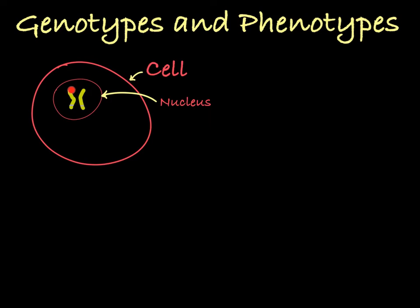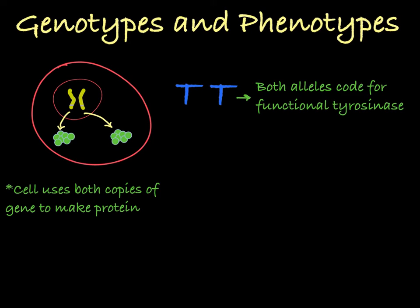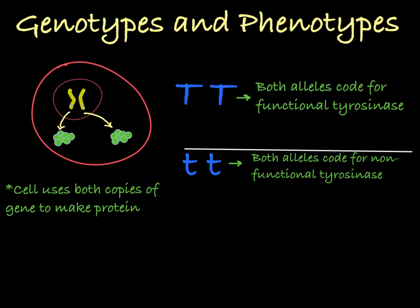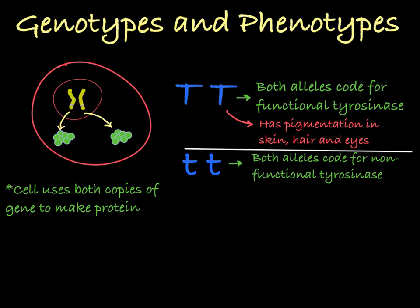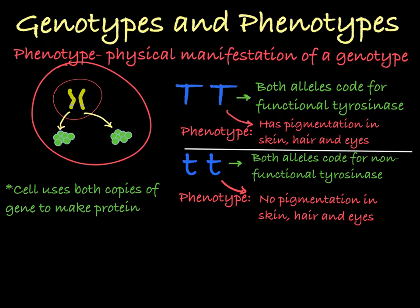Now if you have two copies of a gene, your body accesses and uses both of them to make the protein they code for. So if you have the genotype big T, big T, all of the tyrosinase you make is the functional kind that can help produce melanin. If you are homozygous little t, all of the tyrosinase you make is the non-functional version of the enzyme. This person will be unable to make melanin and therefore lack pigmentation in their hair, skin, and eyes. This coloring is the person's phenotype, which is the term for the physical manifestation of a person's genotype. This person has two alleles that code for defective tyrosinase, which will have a phenotype characterized by a lack of pigmentation or coloring in the skin, hair, and eyes. This is known as albinism.